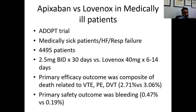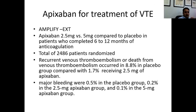One important advantage of apixaban compared to rivaroxaban is that, although the dose is twice daily, apixaban can be used even in patients with creatinine clearance less than 30 mL/min. This is something to keep in mind, because patients with atrial fibrillation often also have heart failure, longstanding hypertension, and diabetes — meaning their renal function may not be pristine. Apixaban is therefore an option to consider in renally impaired patients.